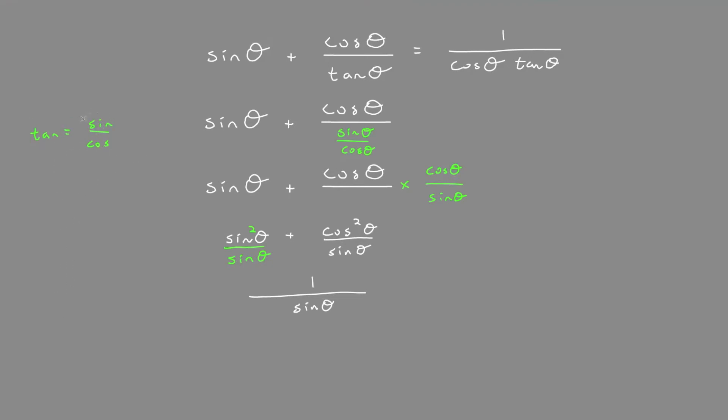if we isolate for sine, sine theta equals tan theta times cos theta, or cos theta times tan theta. And so we can substitute this into the denominator here.